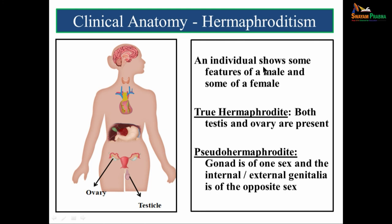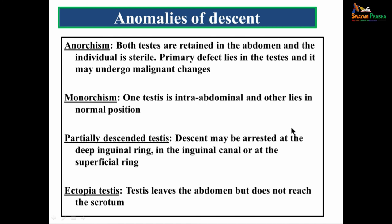Hermaphroditism is a condition where an individual shows features of both male and female. In true hermaphroditism, both testis and ovary are present. In pseudo-hermaphroditism, the gonad is of one sex and the internal or external genitalia is of the opposite sex. Anomalies of descent include anorchism, monorchism, and partially descended testis. In anorchism both testes are retained in the abdomen and the individual is sterile. In monorchism one testis is intra-abdominal and the other lies in the normal position.